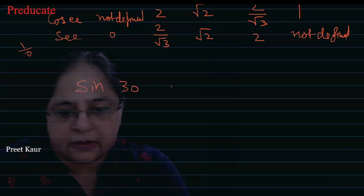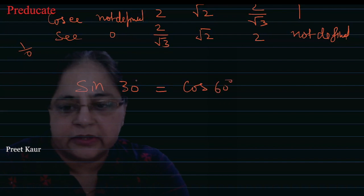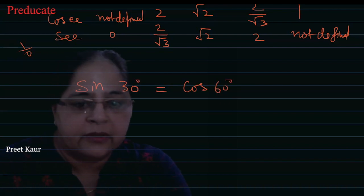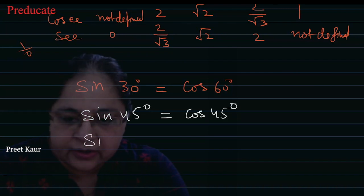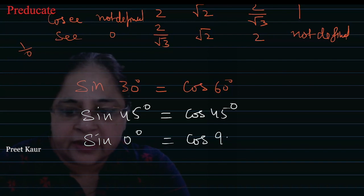Sine 30 degree value is the same as cos 60 degree value. And sine 45 degree value is the same as cos 45 degree value. And sine 0 degree value is the same as cos 90 degree.